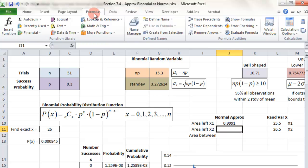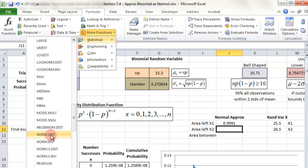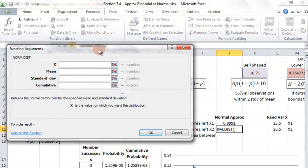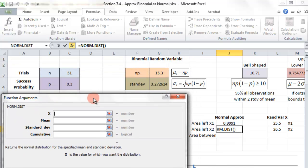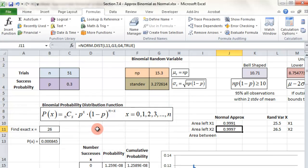Then I do the same thing here. Norm distribute. I choose the correct X value again, but this X value over here. The mean, standard deviation, cumulative, hit enter. So this is to the right of that one.